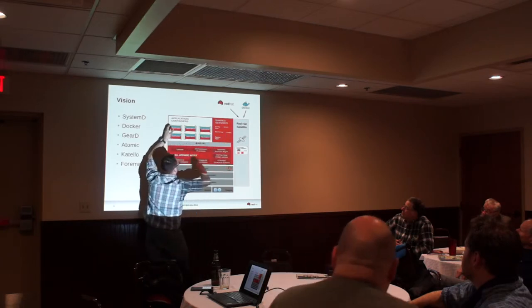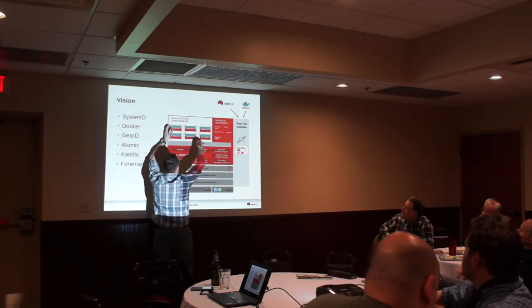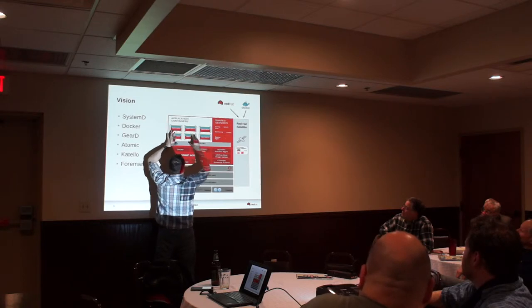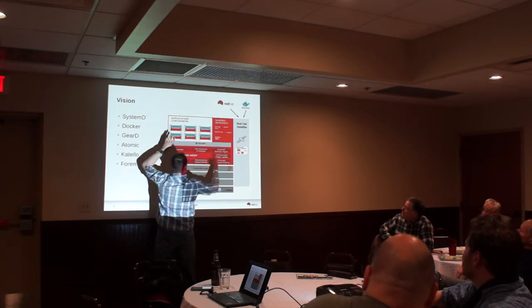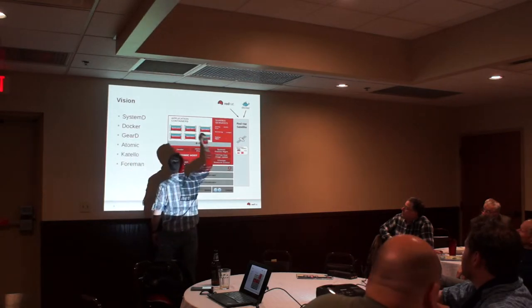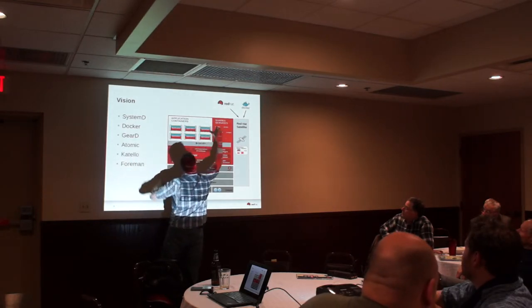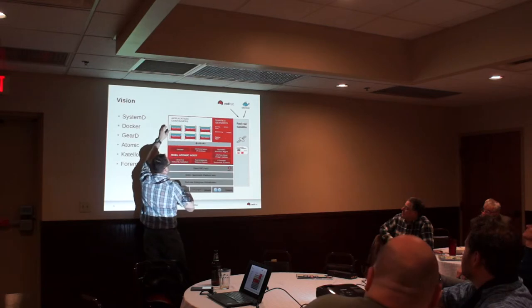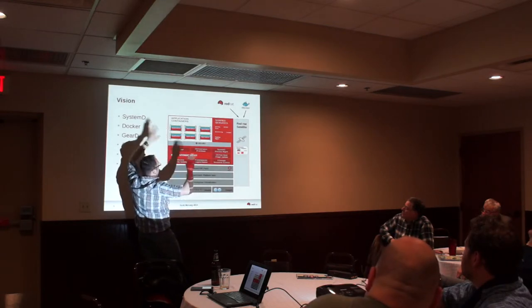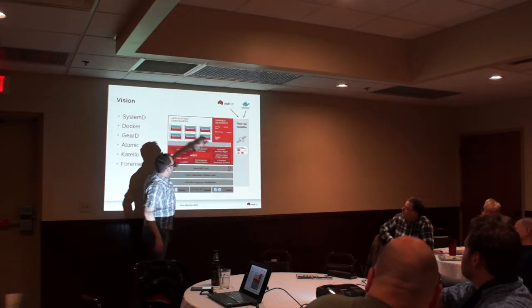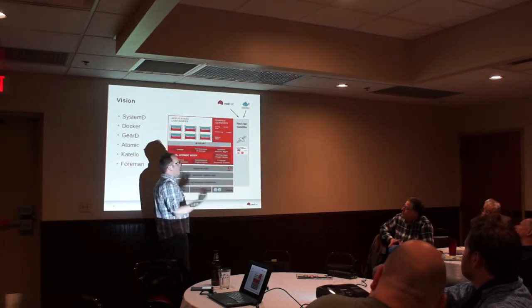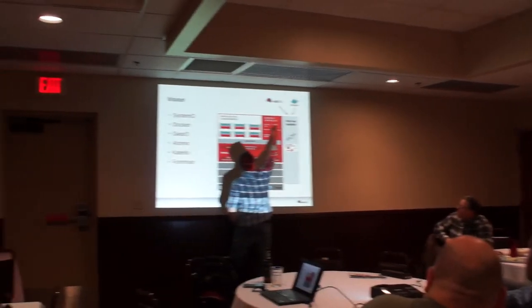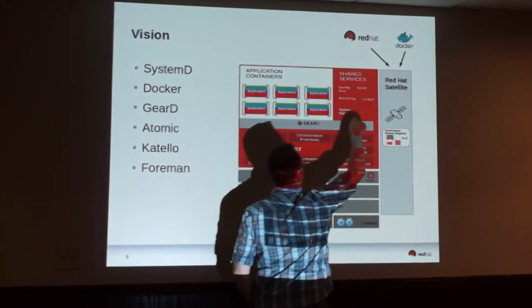This here is an OS. Gear D controls a higher layer - System D will control containers inside of an OS instance. Gear D is even higher level. Docker and System D will live in the OS. You'll fire up a container for identity services, a container with your NAGIOS monitoring, another container with SSH to provide SSH to the whole OS instance.